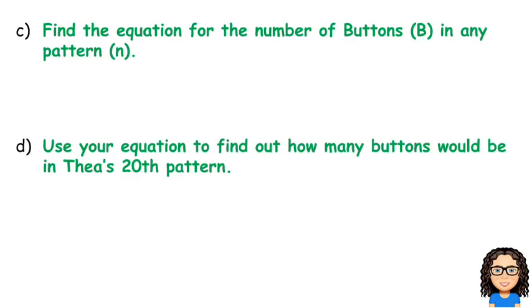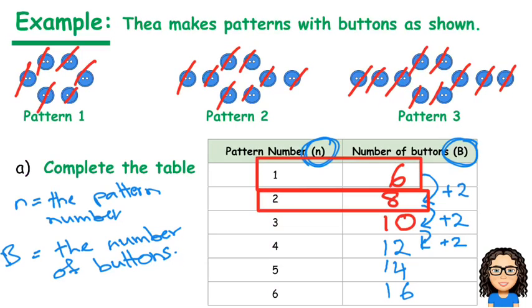So, find an equation for the number of buttons. We need to think about the number of buttons B in any pattern n. So let me go back to this table. I know that I'm adding on 2 buttons each time. So each time I go up another pattern number, I add on 2.